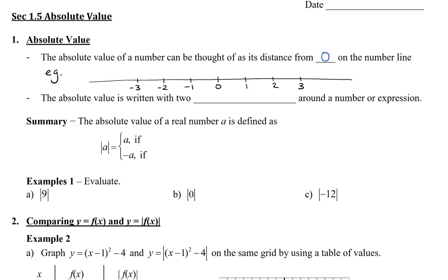Here we have a number line. If we want to find the absolute value of 3, we can see that 3 has a distance of 3 on the number line, so the absolute value of 3 equals 3. What about the absolute value of negative 3? That is the distance from negative 3 to 0, and we can see that is still three spaces, so the absolute value of negative 3 equals 3.